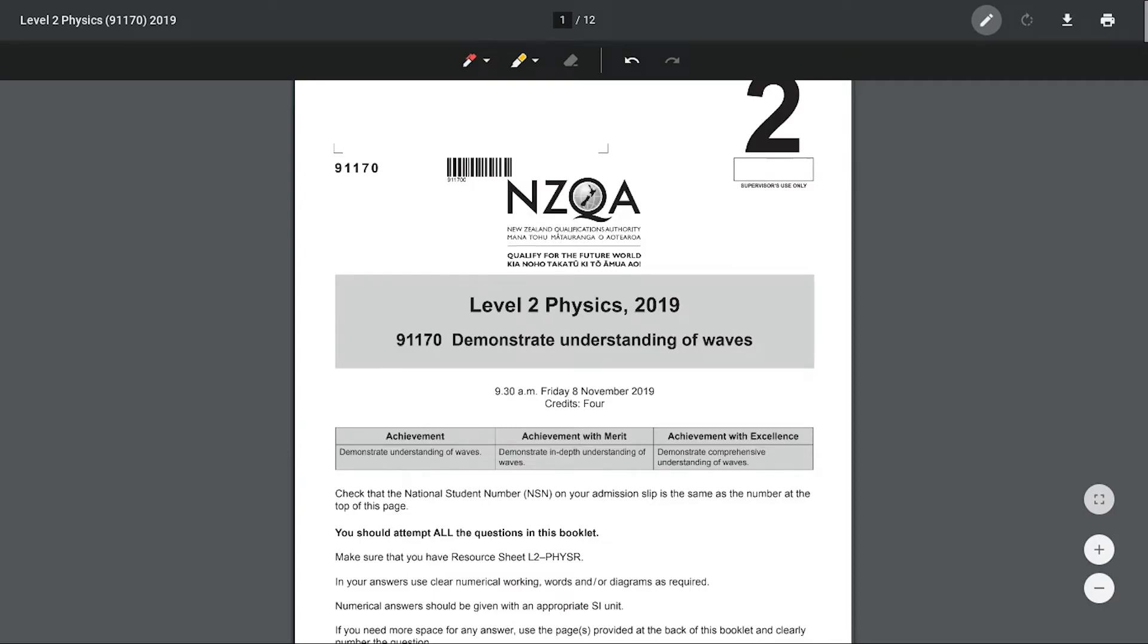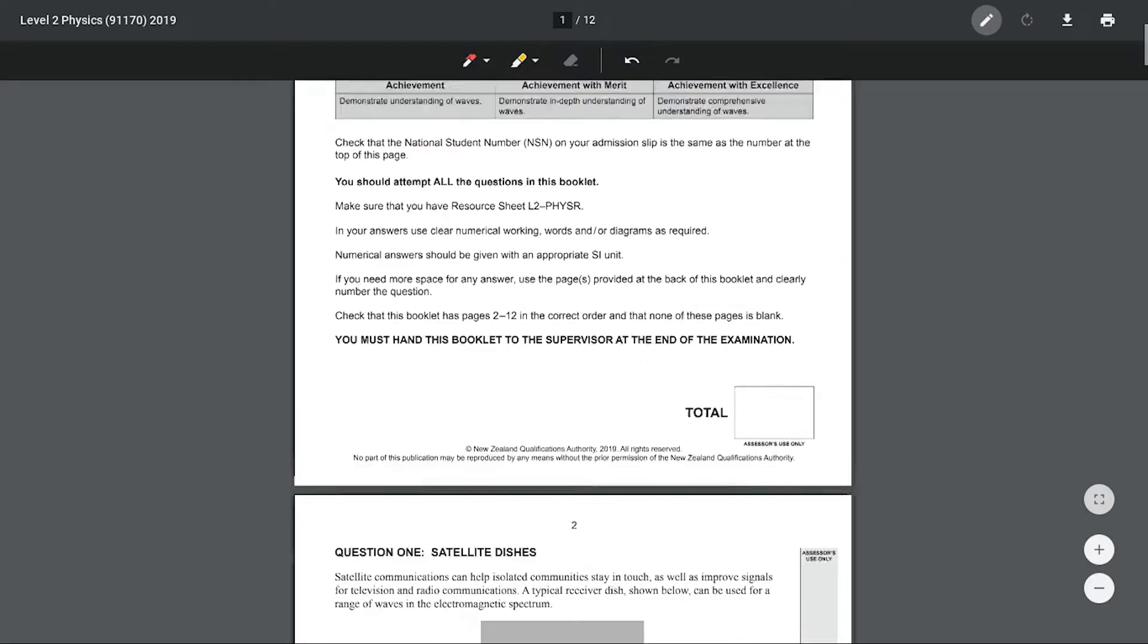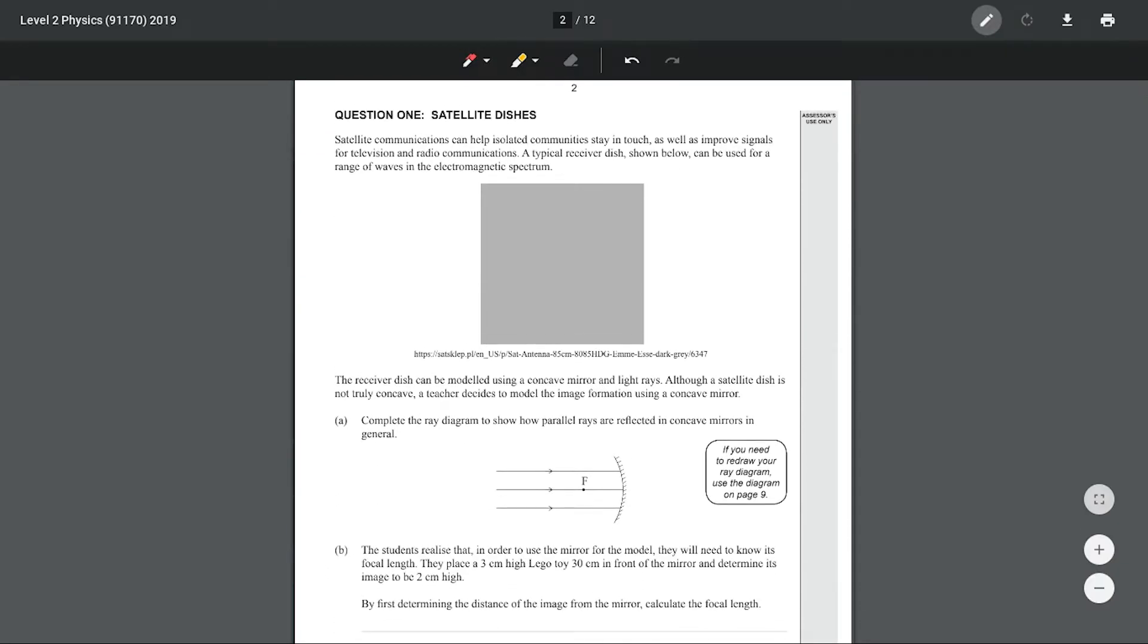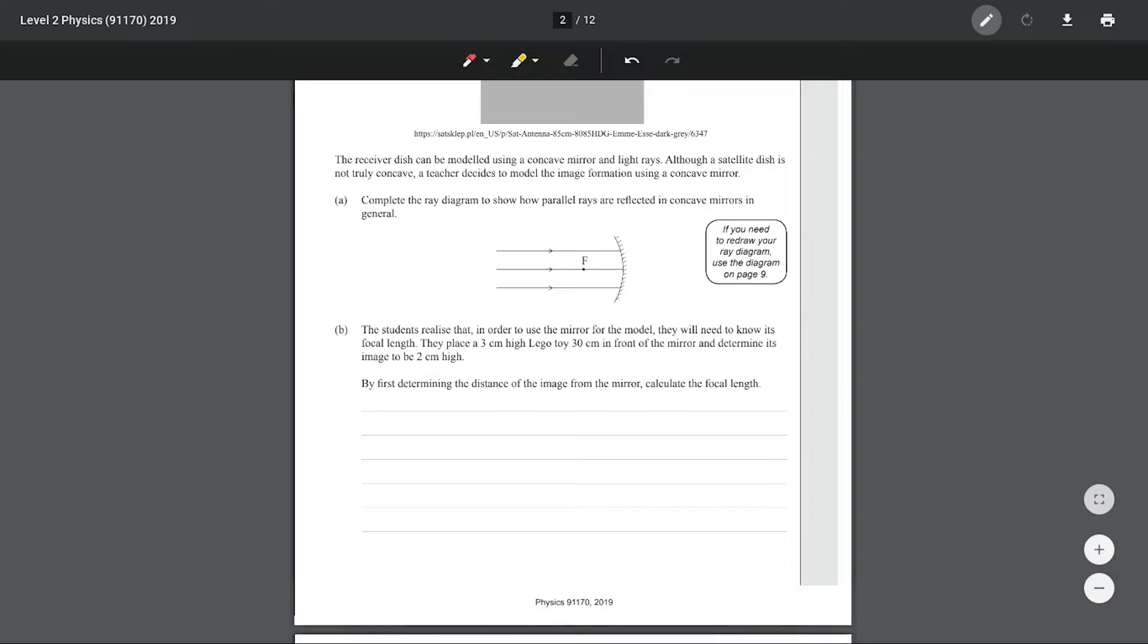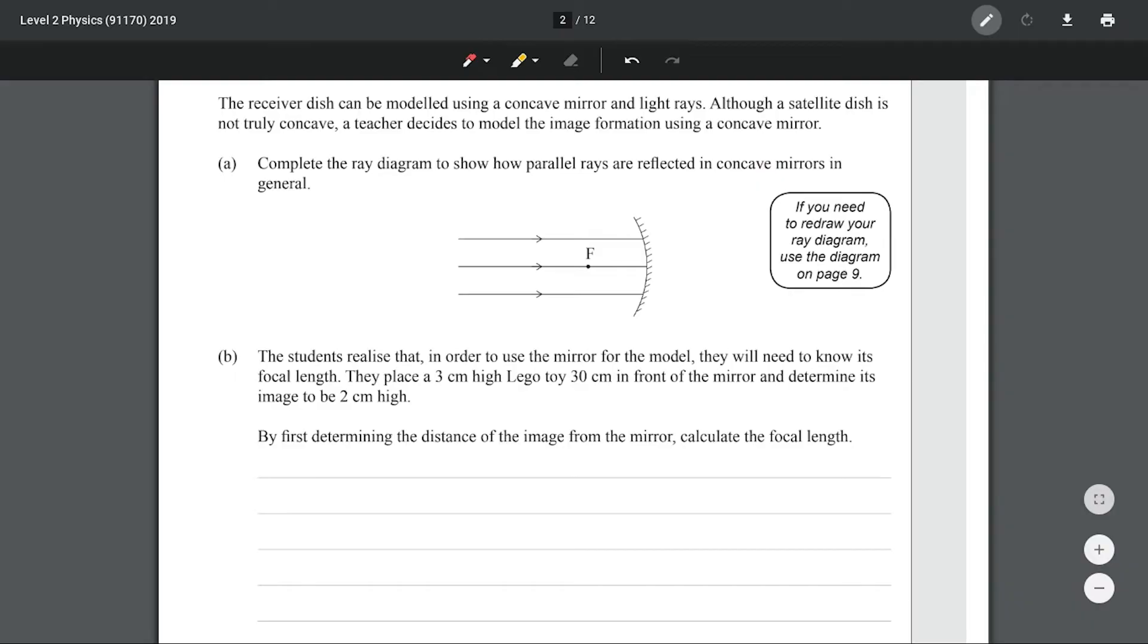In this video we'll be going through the 2019 waves paper. Complete the ray diagram to show how parallel rays are reflected in concave mirrors. Well, concave mirrors converge rays, as opposed to convex mirrors which diverge rays. So what it's asking us to show is that we know concave mirrors converge rays to the focal point. Let's do that.